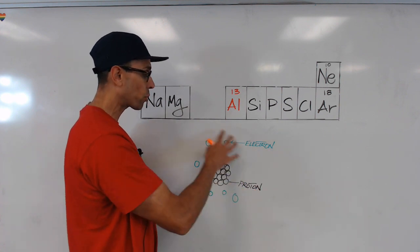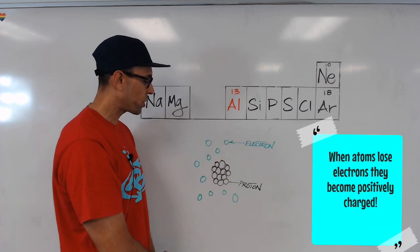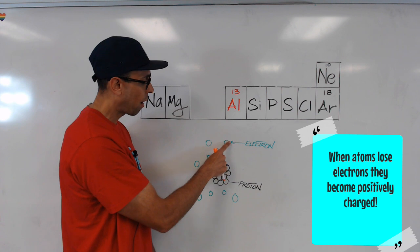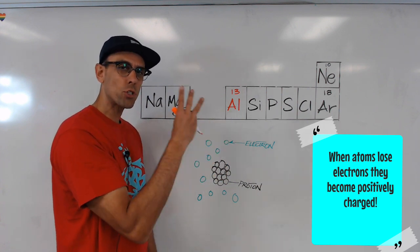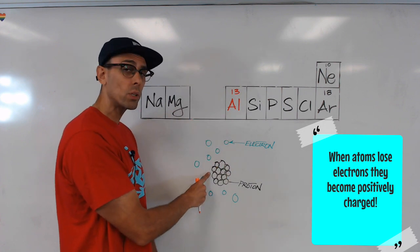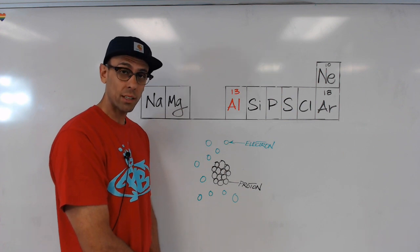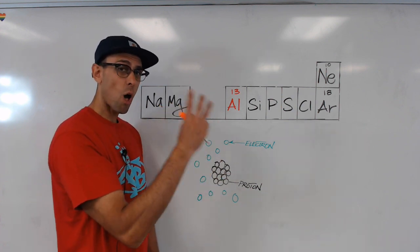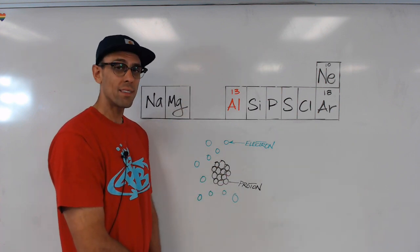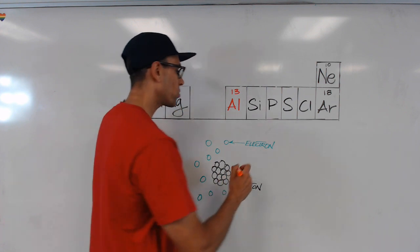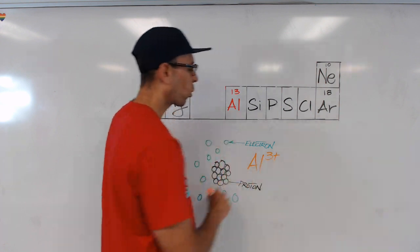Now, because this neutral atom has lost three of its electrons, when we look at the balance of charges, we still have 13 protons, but we only have 10 electrons. So, there are three extra positive charges in the nucleus that don't have a matching electron in the electron cloud. So, for aluminum, because it lost three electrons and now has three extra protons in the nucleus, we are going to say that its ionic charge is positive three or three plus.